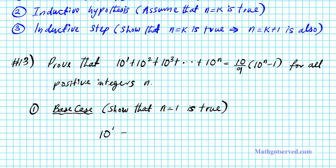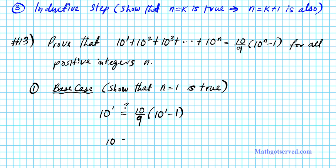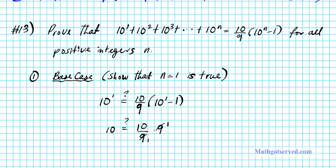So the question is: is 10 to the first power equal to 10 over 9 times 10 to the 1 minus 1? Well, 10 to the first power is just 10. On the right side, 10 over 9 times 10 to the 0: since 10 to the 0 is 1, and 10 over 9 times 9 over 10 simplifies, these divide out to 1, giving us 10. So is 10 equal to 10? Absolutely. Our base case is sound.